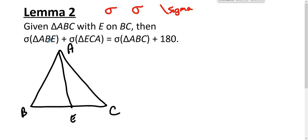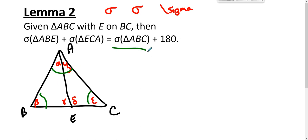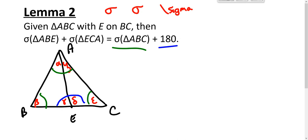Lemma 2 states: sigma of triangle ABE plus sigma of triangle ECA equals sigma of triangle ABC plus 180. The sum of the angles of triangle ABE is those three angle measures, and the sum for triangle ECA is those three angle measures. Together, four of those angles form the angle sum of triangle ABC, and the remaining two form a linear pair summing to 180. So Lemma 2 follows right from there.